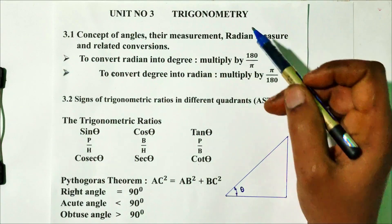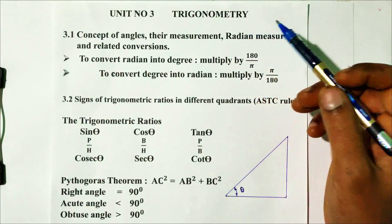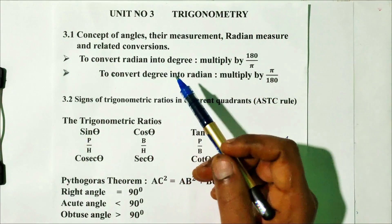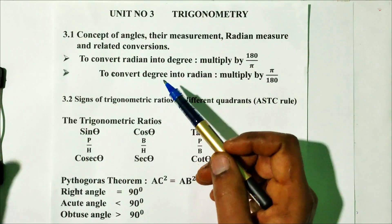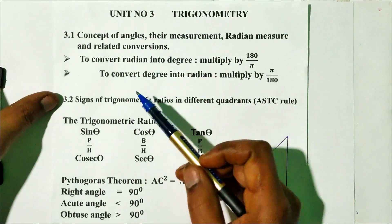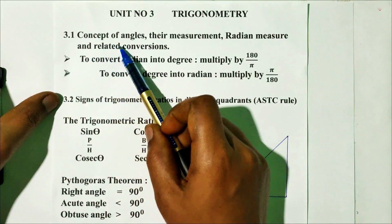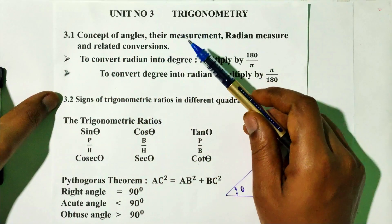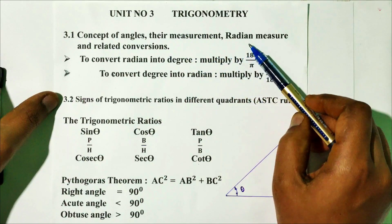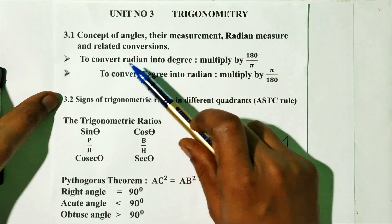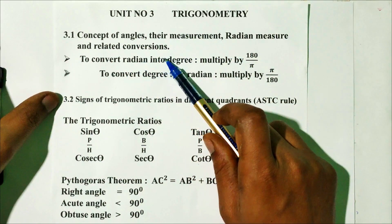Unit No. 3: Trigonometry. I will note one of the topics in the unit. The first topic is 3.1 Concept of Angles, Measurement, Radian Measure and Related Conversion.